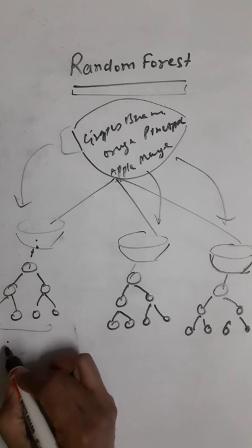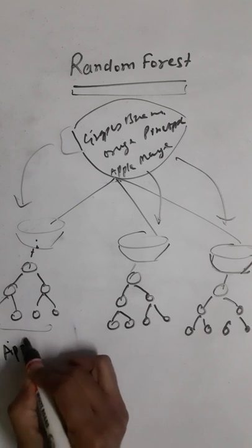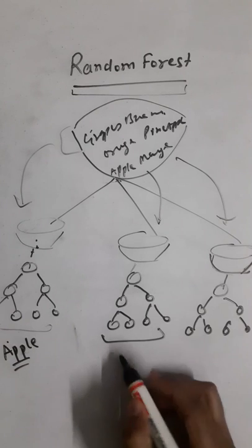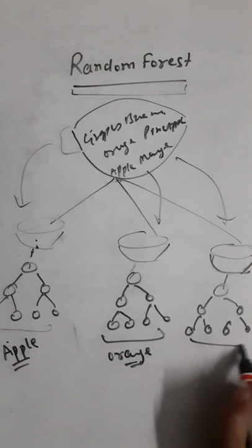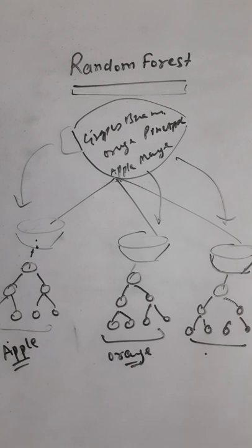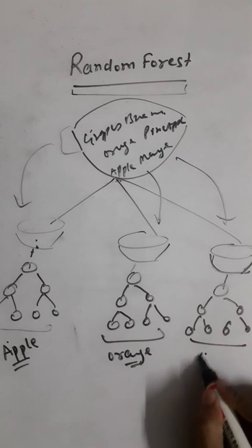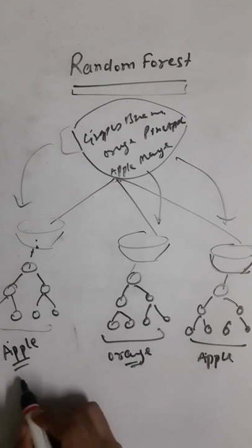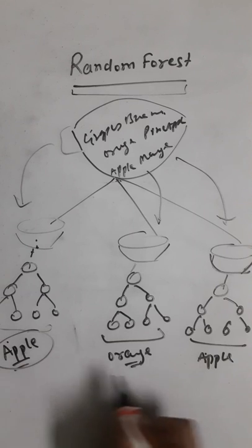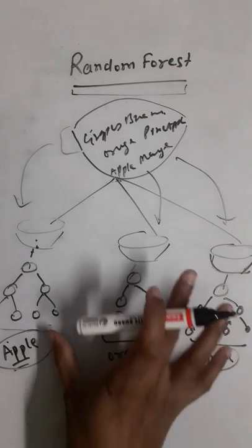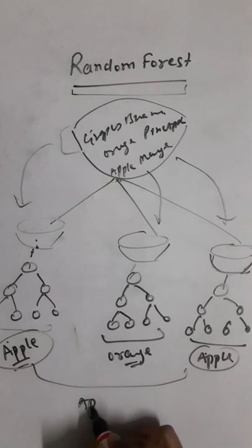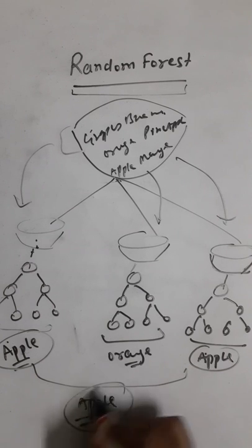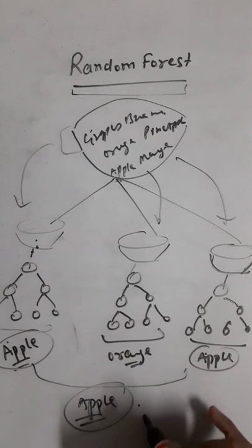Now let's say after creating decision trees, this decision tree predicted that the given fruit is an apple, this tree predicted that the given fruit is an orange, and the third tree predicted it as an apple. What we are going to do is take majority vote. Because two trees out of three have predicted it as an apple, our final answer from Random Forest will be an apple.